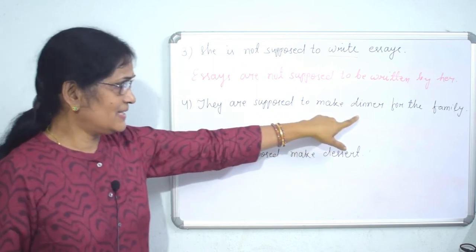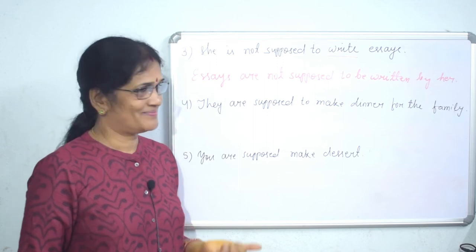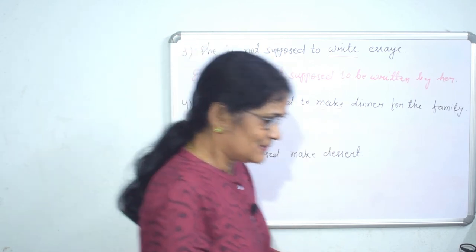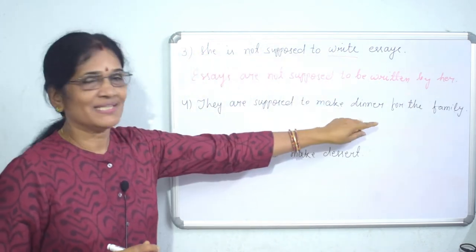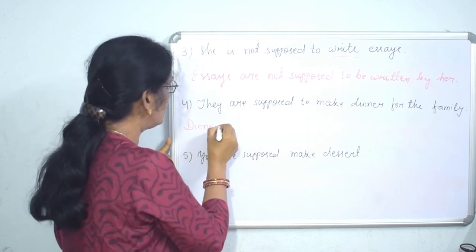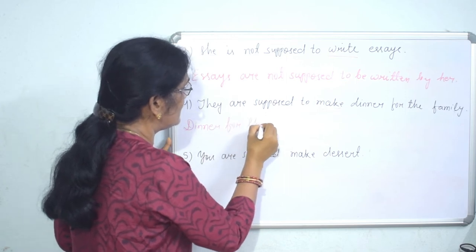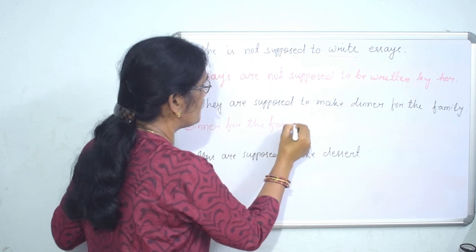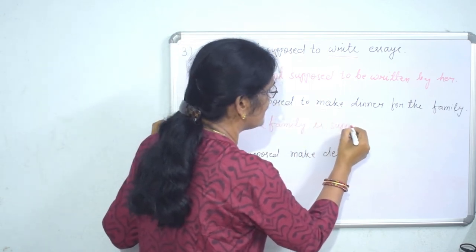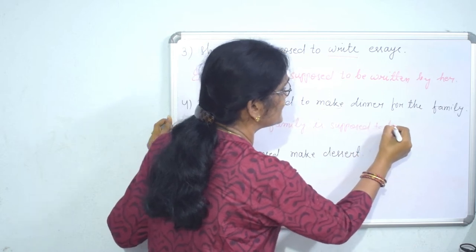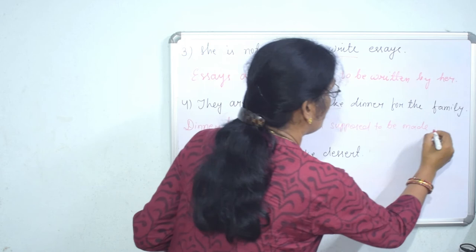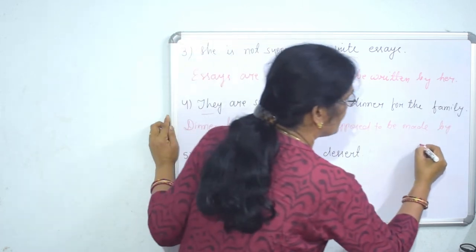Next: 'They are supposed to make dinner for the family.' The verb is 'make' — make what? Dinner for the family. Dinner for the family is the object in this sentence; that will be the subject in the passive structure. So: 'Dinner for the family is supposed to be made.' 'Be' verb is added and the past participle of 'make' is 'made.' By whom? 'They' becomes 'them': 'by them.'